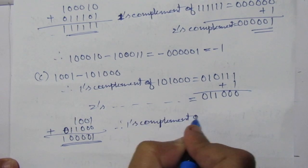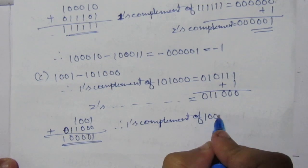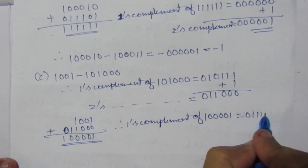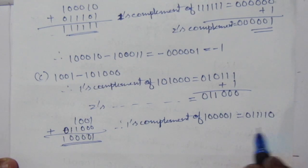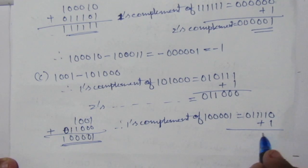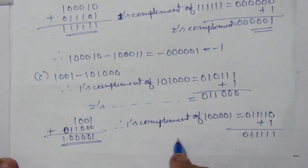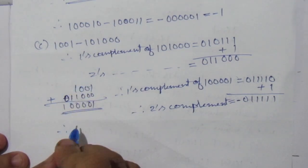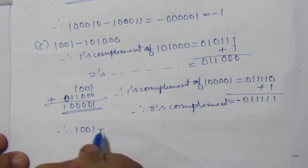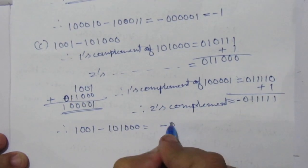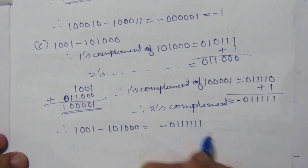The 1's complement of 1000001 equals 0111110. Add 1 to find the 2's complement: 0111111. So this is the 2's complement. Therefore, you add a minus sign. So 1001 minus 1010000 equals minus 0111111, which equals minus 1111111.